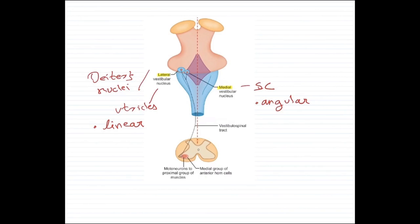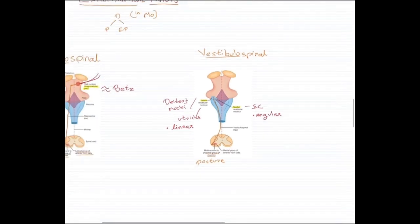During angular acceleration, posture is maintained by impulses arising in the medial vestibular nuclei. After originating in the vestibular nuclei, the fibers pass down ipsilaterally — along the same side — and terminate on the medial group of anterior horn cells. They then give off nerve fibers to the proximal group of muscles, thereby regulating posture. That covers the rubrospinal and the vestibulospinal tracts.